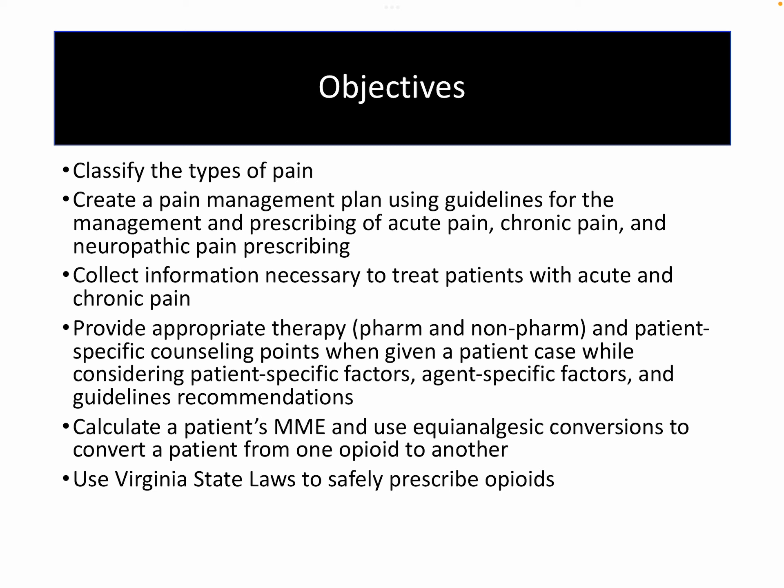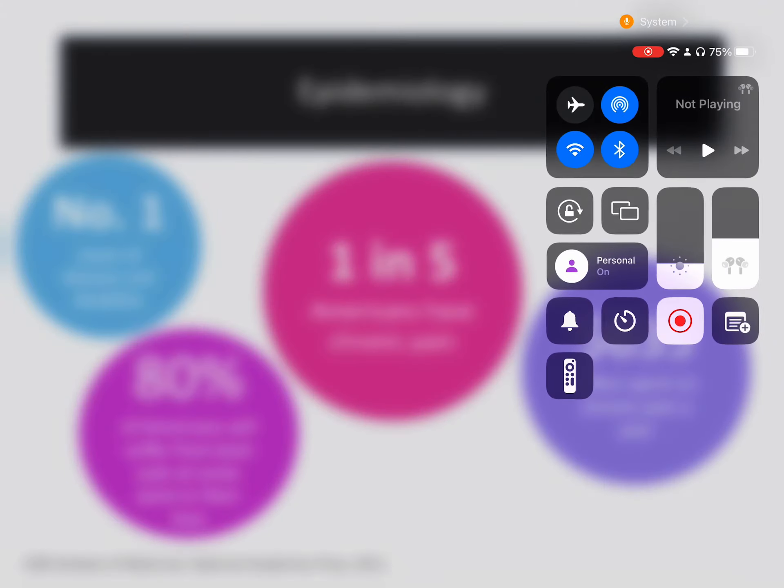I want you to be able to collect information to treat patients with acute and chronic pain — a lot of that falls around what we call the PQRSTS. We're going to calculate MMEs and do opioid rotations or equipotent dosing, which people probably struggle with the most. I'd highly suggest coming into class able to do those or having questions, and then using Virginia state laws to prescribe opioids.